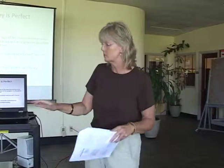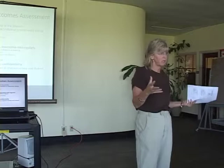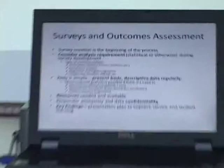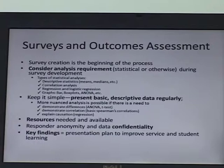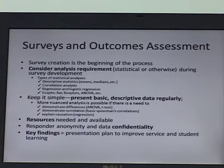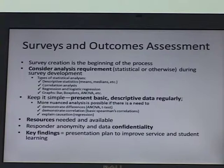Now we're going to talk about surveys and this whole outcomes assessment process the college is engaging in. The actual creation of the survey is just the beginning of the process — and just the second step in the five-step outcomes assessment process. You have to consider the back end, which is the analysis — that's called closing the loop. You have your outcome, the survey is your assessment tool, you've set some criteria for success, you do the survey, but then you've got to analyze it and come up with a plan based on the information from the survey.